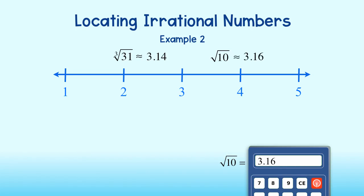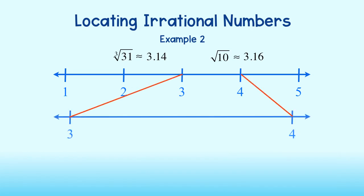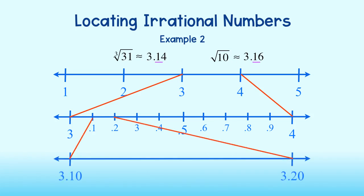Since these decimals are so close to one another, it's going to be helpful to enlarge the number line between 3 and 4. We can divide this part of the number line into tenths. However, notice that these two numbers have the same digit in the tenths place. Let's go ahead and enlarge the number line again between 3.1 and 3.2. We can divide this into hundredths.